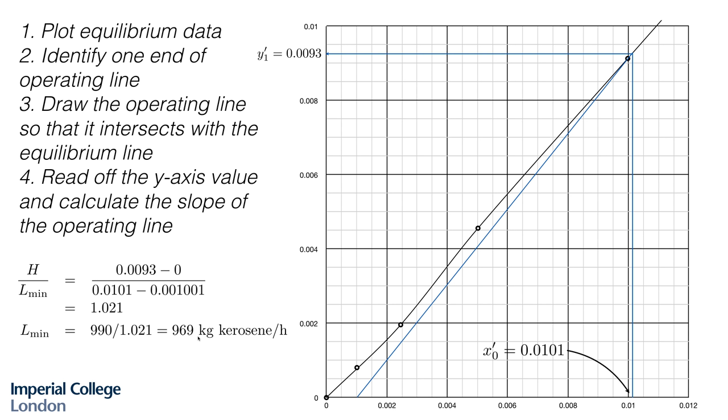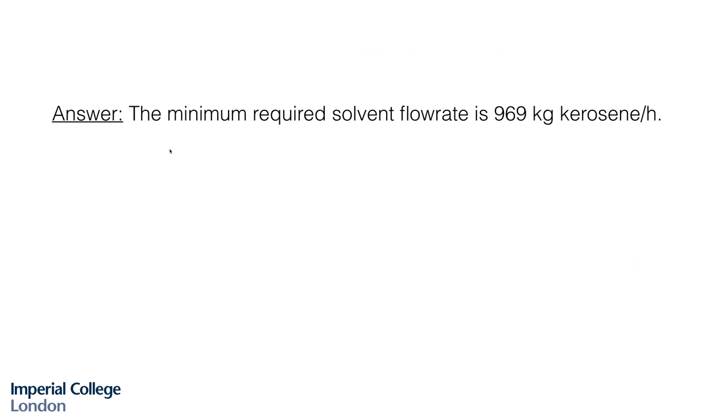If you're writing up the solution to a problem like this, it's nice to just write that out in words and make it very clear that you've answered the question. The minimum required solvent flow rate is 969 kilograms of kerosene per hour.